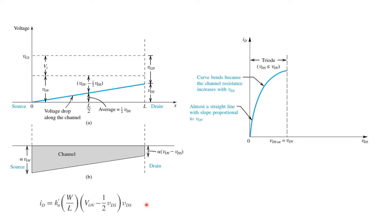This triode mode expression persists as long as VDS is less than VOV, which is also referred to as VDS saturation, for reasons that will become obvious soon.